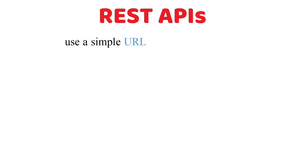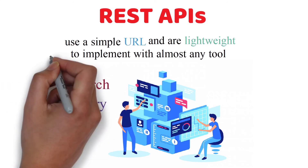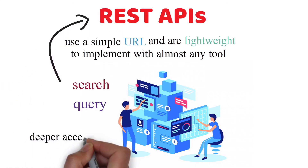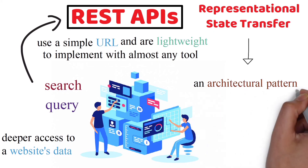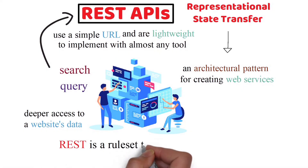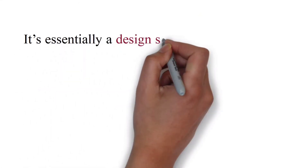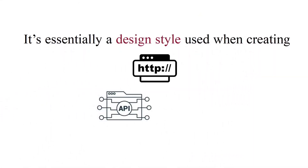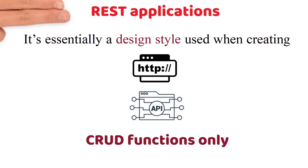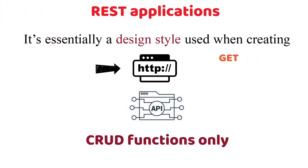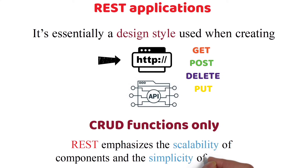REST APIs use a simple URL and are lightweight to implement with almost any tool. Developers get a set of search and query tools with the REST API that helps them gain deeper access to a website's data. REST API stands for Representational State Transfer and is an architectural pattern for creating web services. REST is a rule set that defines best practices for sharing data between clients and the server. It's essentially a design style used when creating HTTP or other APIs that asks you to use CRUD functions only, regardless of the complexity. REST applications use HTTP methods like GET, POST, DELETE, and PUT. REST emphasizes the scalability of components and the simplicity of interfaces.